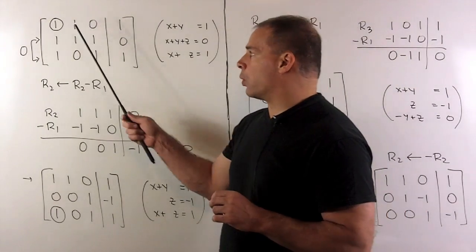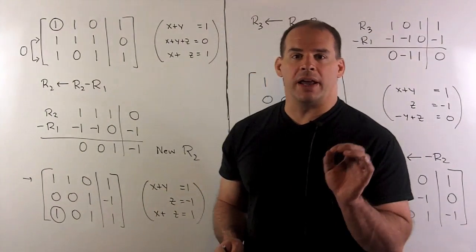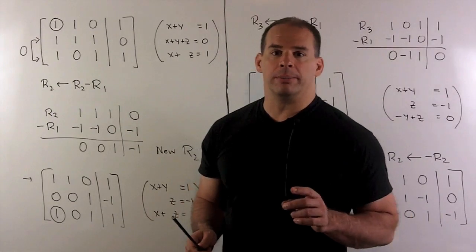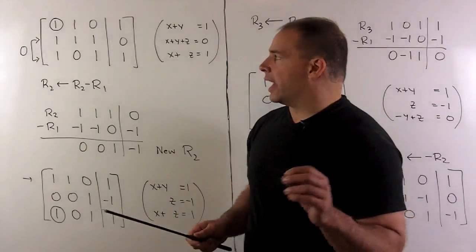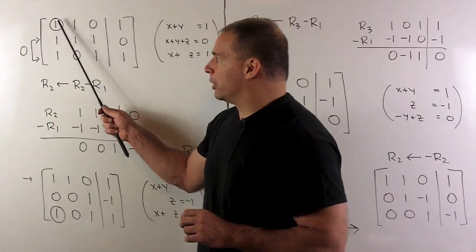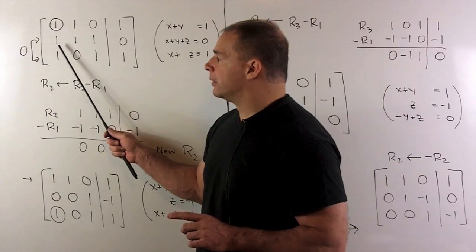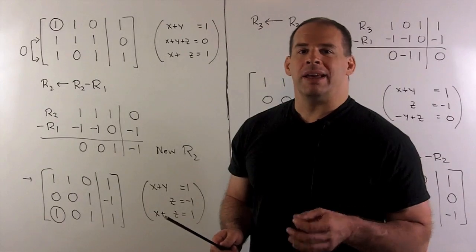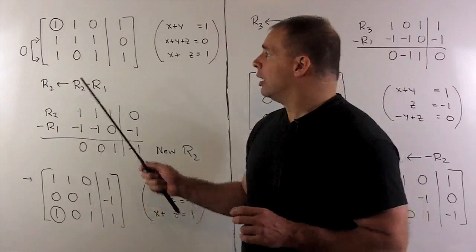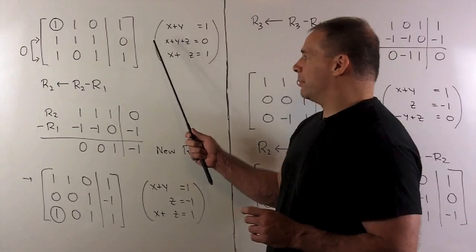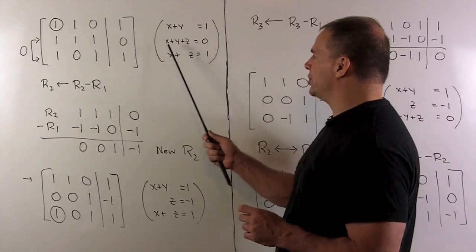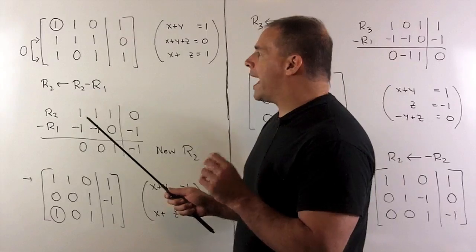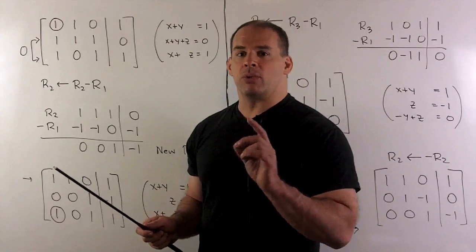We start in the upper left-hand corner. I want to turn that entry into a 1. We note it starts out as a 1, so there's no work to be done. For our next step, I want the entry below this 1 to be a 0. Now we can't get it to become 0 by row switching. If I multiply the row by 0, we're going to get all 0s, and that's the same as just setting this equation here to 0 equals 0. So that doesn't help. So I want to add a multiple of a row to our second row to get 0.